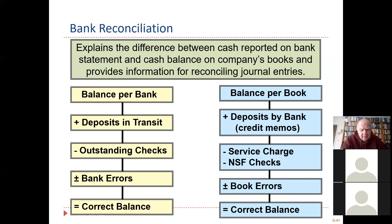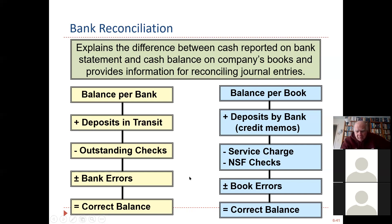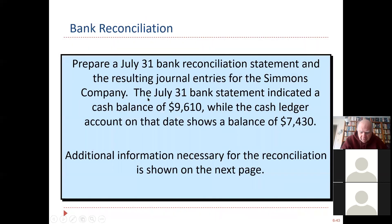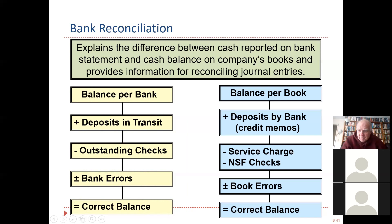Here's the template for your bank reconciliation. Take the balance per bank, add deposits in transit, and subtract outstanding checks. A deposit in transit is a check you received from a customer and mailed to the bank at the end of the month — the bank didn't know it was on the way. An outstanding check is a check the company wrote that the bank doesn't have yet. Whatever you see on the bank side, you don't have to do anything in terms of journal entries.